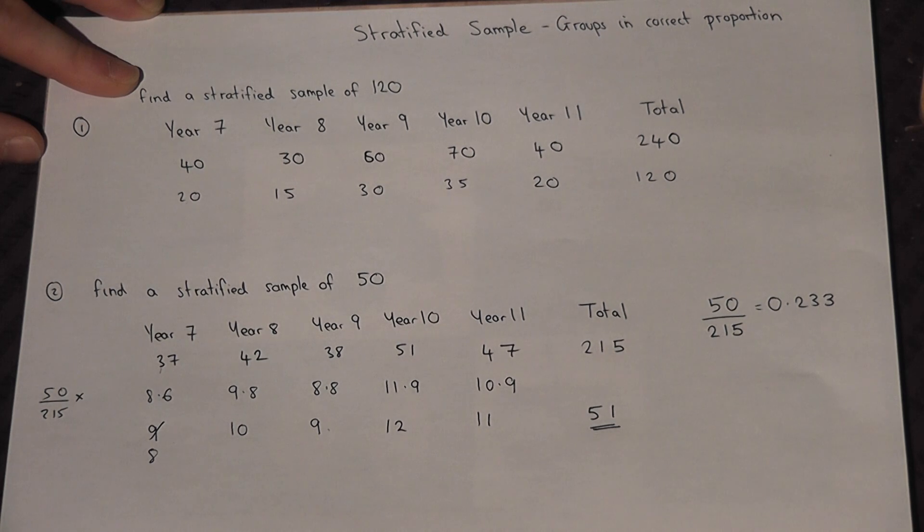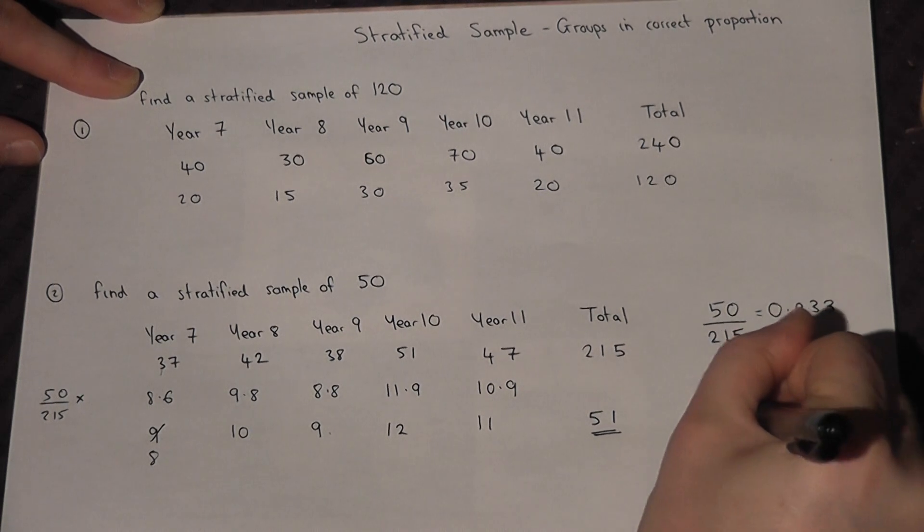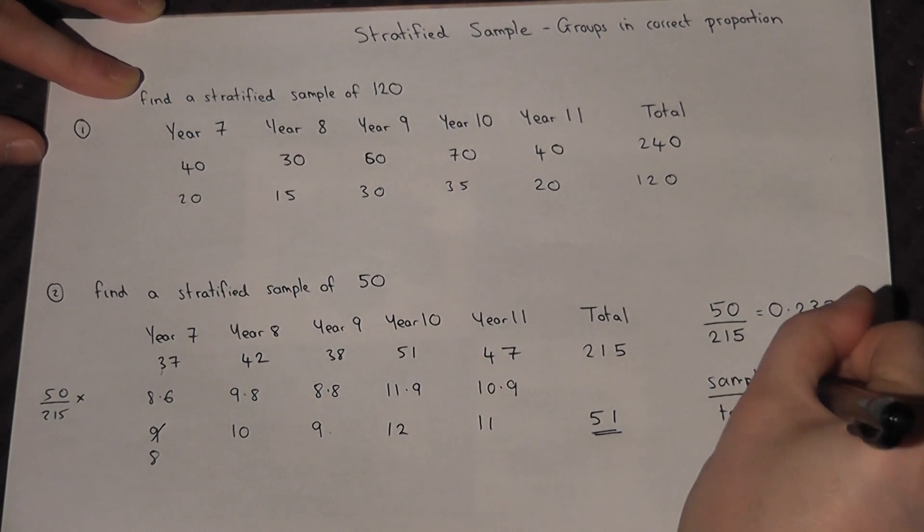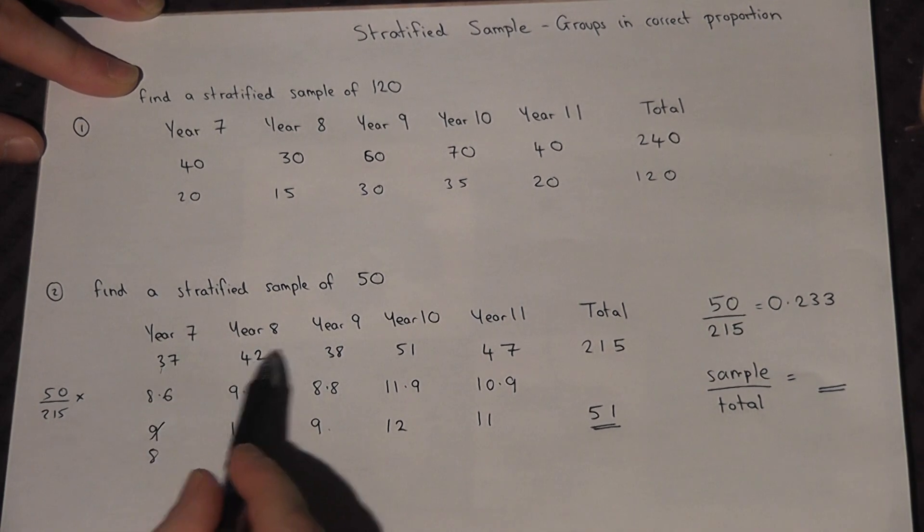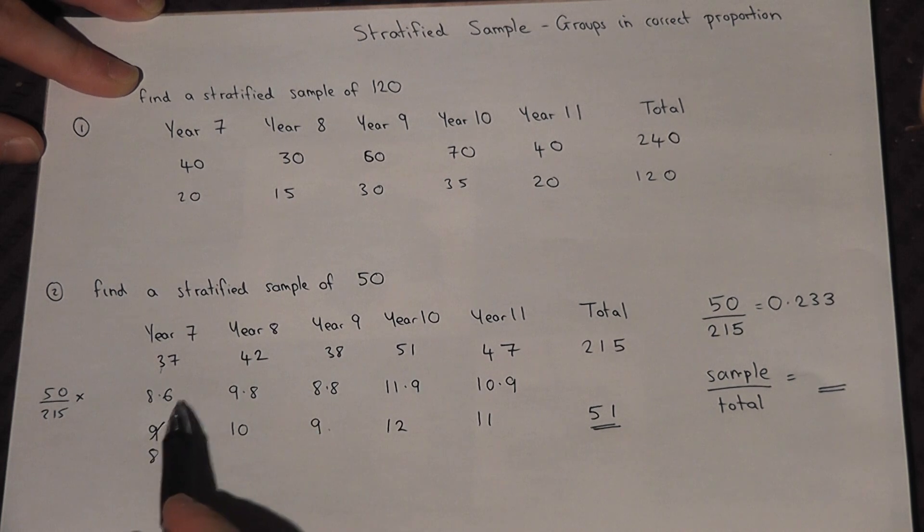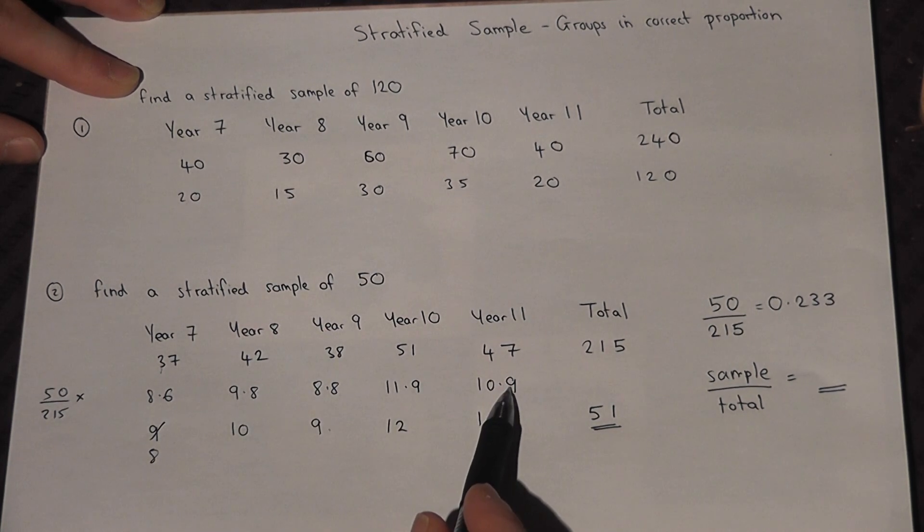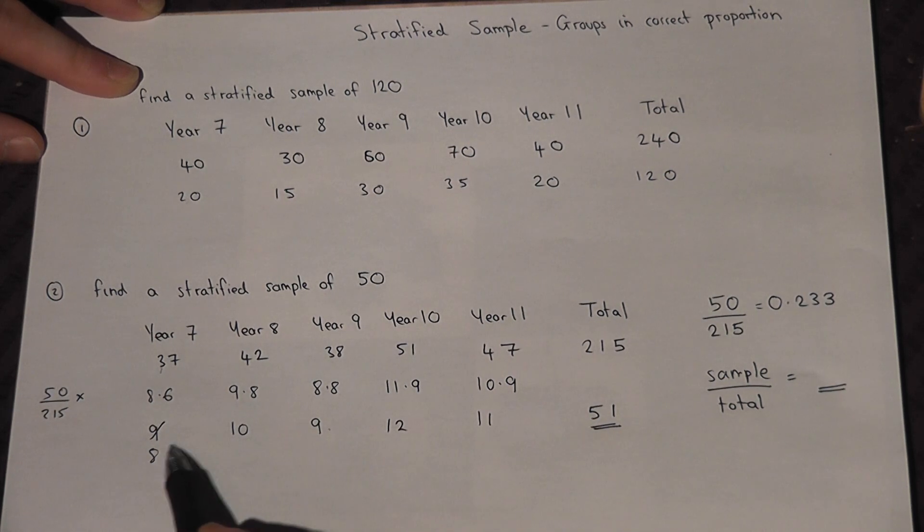So to generalise, it's sample size over total. Find that as a fraction or a decimal, and then times each of the separate groups by that amount, round where appropriate. Check you get the correct sample size. If not, make a choice.